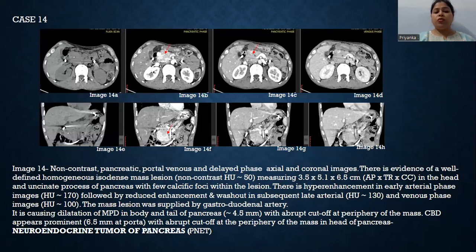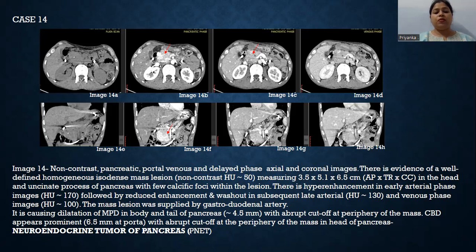The last case is a neuroendocrine tumour of the pancreas. Non-contrast, pancreatic, portal venous, and delayed phase axial and coronal images show a well-defined, homogeneous, isodense mass lesion in the head of the pancreas and uncinate process with few calcific foci. There is hyper-enhancement in the early arterial phase followed by reduced enhancement and washout in the subsequent late arterial and venous phases. The lesion is supplied by the gastroduodenal artery and causes dilatation of the MPD in the body and tail with abrupt cut-off. The CBD appears prominent with abrupt cut-off at the periphery of the mass. These findings are in favour of neuroendocrine tumour of the pancreas.